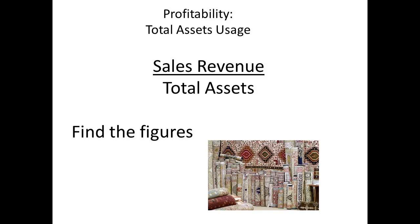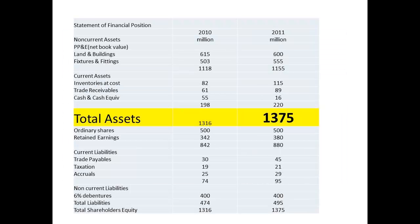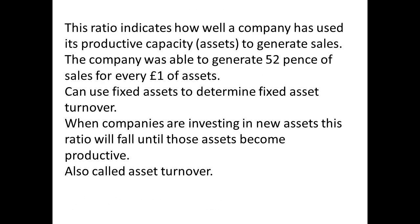Now the total assets usage. We divide sales revenue by total assets. Sales revenue is £720 million, found on the income statement. Total assets can be found on the balance sheet and amount to £1,375 million. We divide 720 by 1,375 and have an answer of 0.52. Note that this time we have a figure and not a percentage. We can express this by saying that the company has generated £0.52 in sales for every pound of assets. The ratio indicates how well the company has used its assets, but a company investing in new assets will find the ratio becomes lowered until those assets come into the production process.